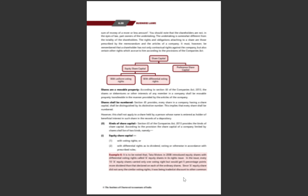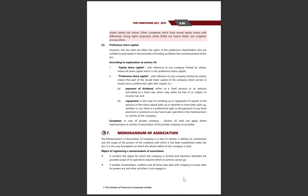So to summarize, share capital is divided into two parts: equity share capital and preference share capital. Equity share capital is further divided into uniform voting rights and DVR. For DVR, the example is Tata Motors, which issued equity shares where 10 shares gave only 1 voting power but 5% more dividend. Preference share capital gives preferential rights over payment of dividend and repayment of capital during winding up or liquidation. Exception: Section 43 is not applicable to private companies. I hope you were able to understand. Thank you so much for watching.